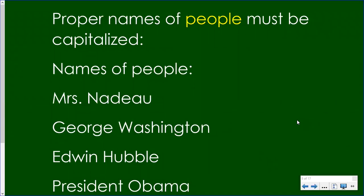Proper nouns that are the names of people always have to be capitalized, such as Mrs. Netto. Both the Mrs. and the N in Netto are capitalized. George Washington — his first name and his last name are capitalized. Edwin Hubble, both capitalized.